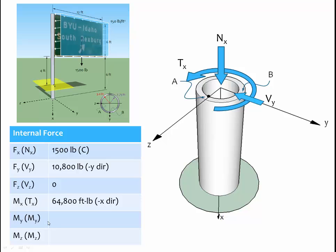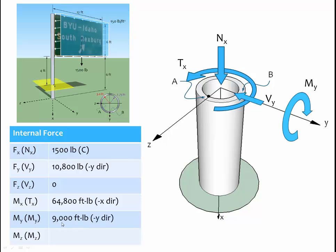There is also a moment about the y-axis — a bending of the pole caused by the weight of the sign. The sign weighs 1,500 pounds and acts at a distance of 6 feet from the pole (half of 12 feet), giving a moment of 1,500 pounds times 6 feet, equal to 9,000 foot-pounds bending about the negative y-direction.